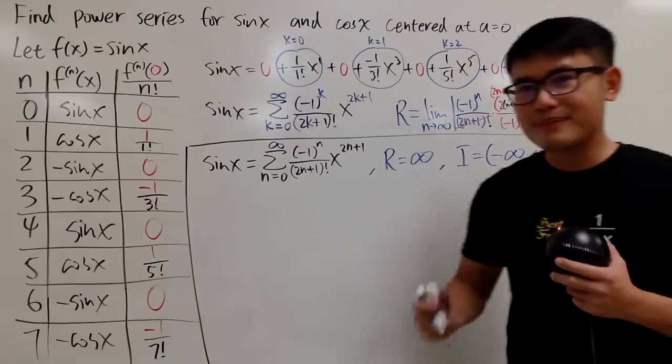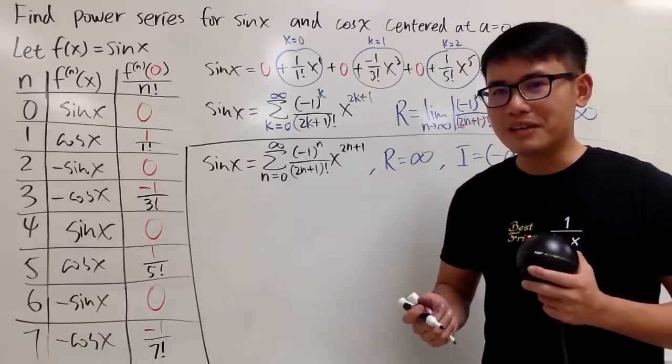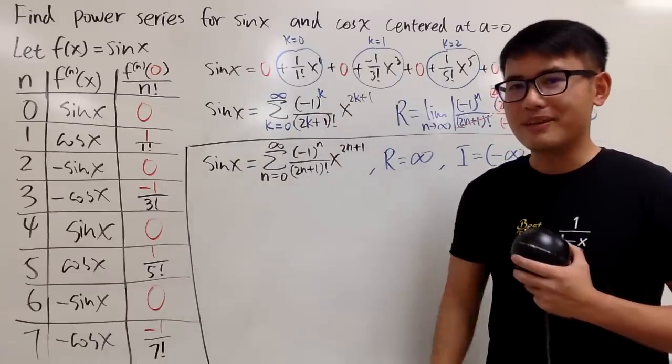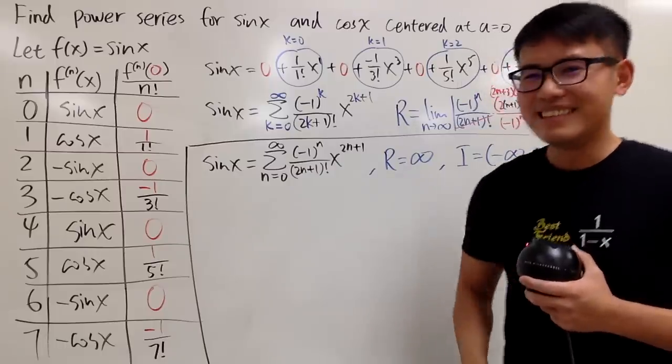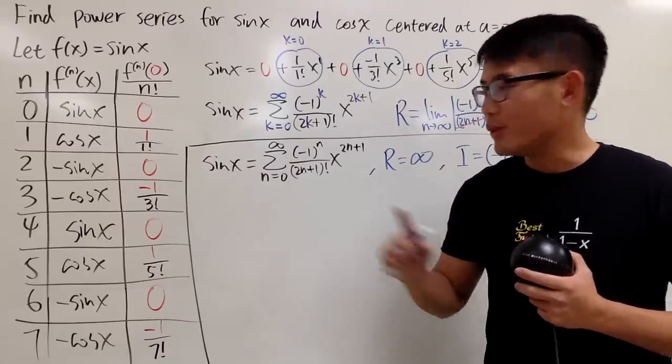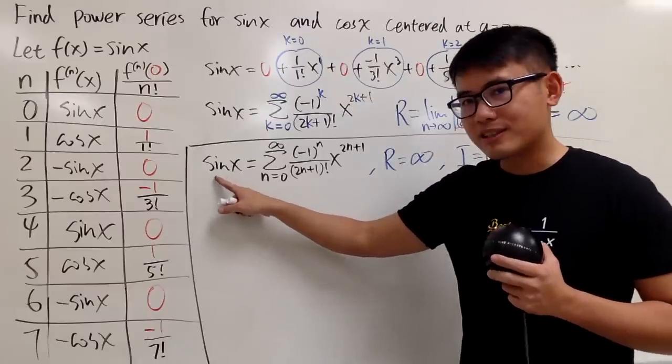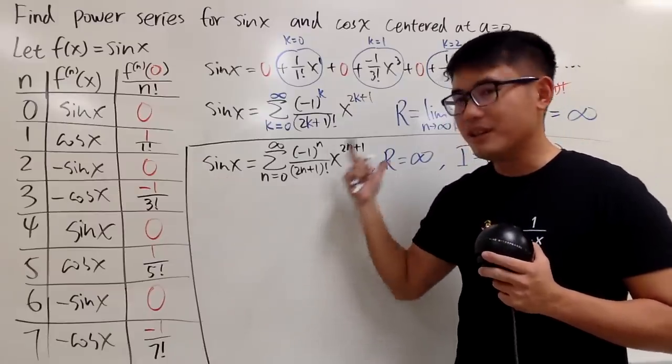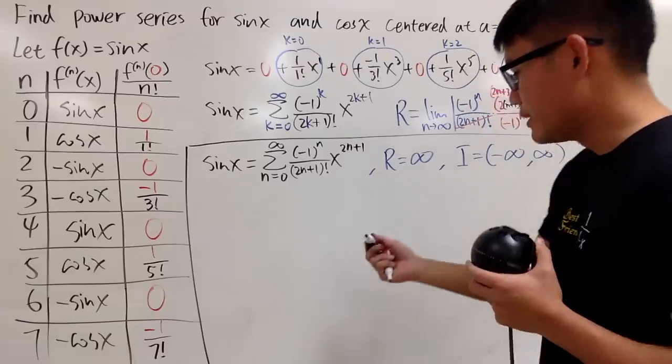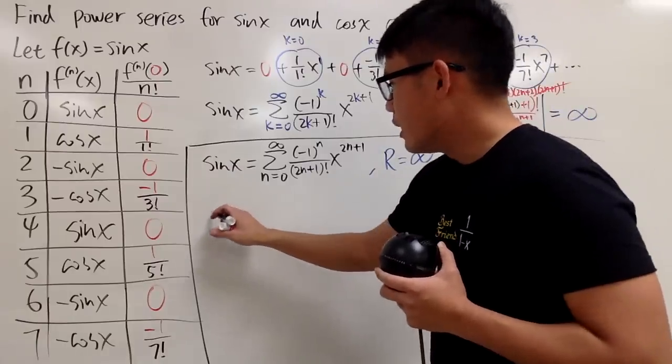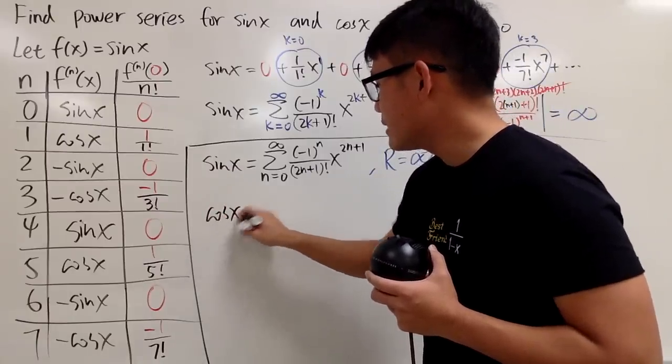Now, how can we get cos x? Do I have to go through all this again? Maybe I'll erase the board right now. No, it's okay. Because we know the derivative of sin x is cos x, and we can totally differentiate this power series.